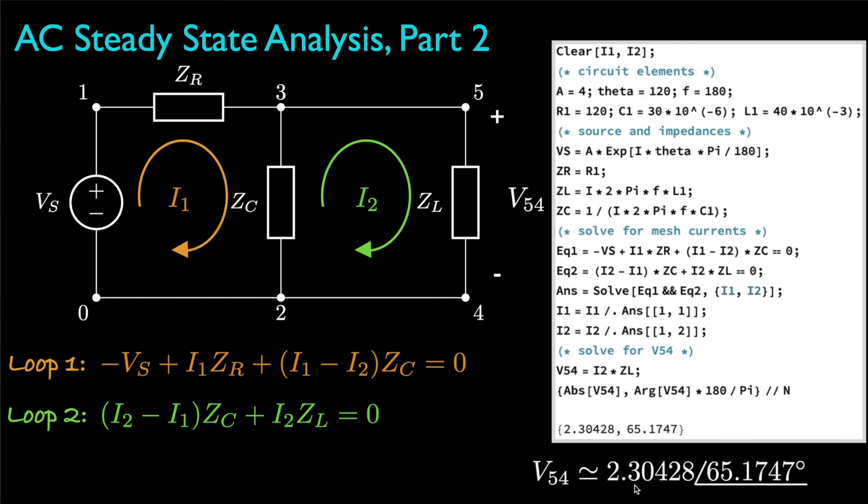And accordingly, the phasor voltage is approximately 2.30428 volts with a phase angle of 65.1747 degrees. Now as a function of time, this is approximately 2.30428 times a cosine with a frequency of 180 hertz and a phase of 65.1747 degrees or 0.362082 times pi expressed in radians.